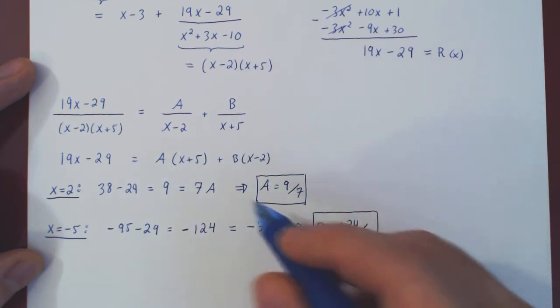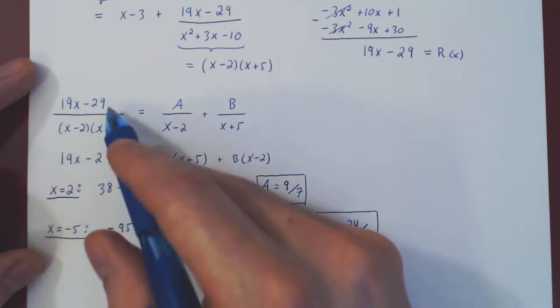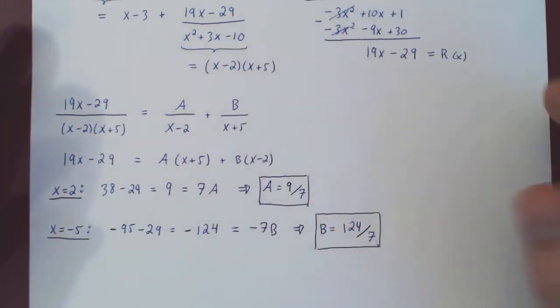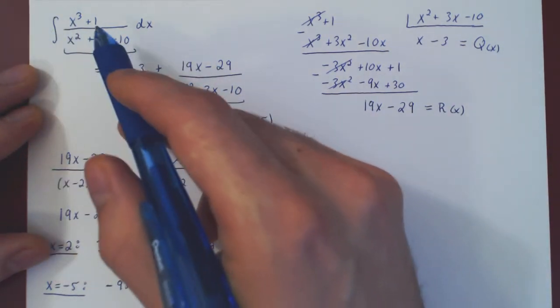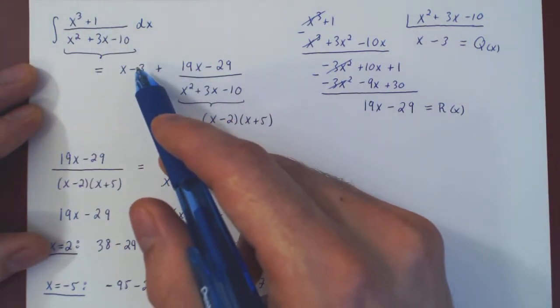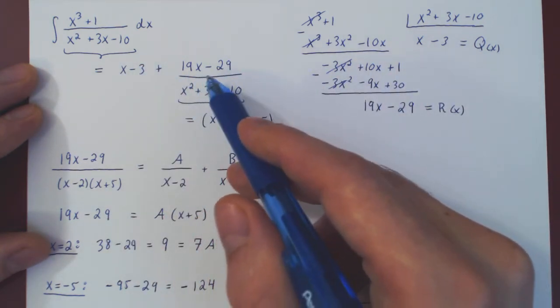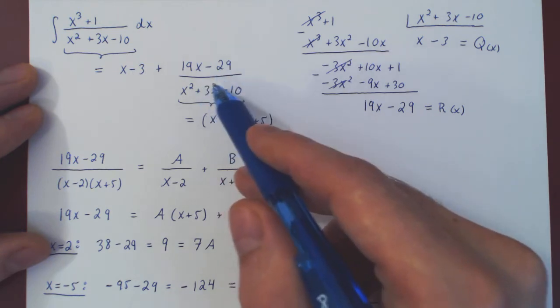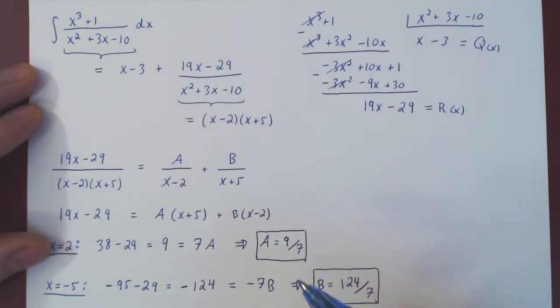And now we have our two coefficients, so we have the partial fraction decomposition of our rational function. And so in the end, instead of integrating the initial rational function directly, we will integrate the result of the long division, the polynomial, plus now the partial fraction decomposition.